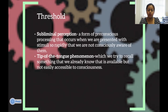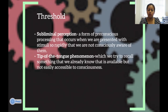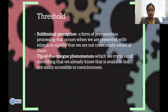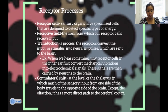Subliminal perception is a form of pre-conscious processing that occurs when we are presented with stimuli too rapidly that we do not consciously — we are not consciously aware of them. The tip-of-the-tongue phenomenon is when we try to recall something that we already know, that is available but not easily accessible to our consciousness.